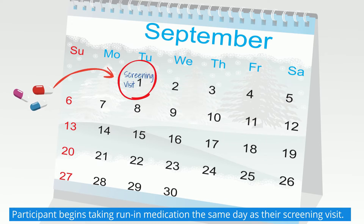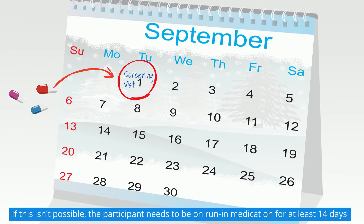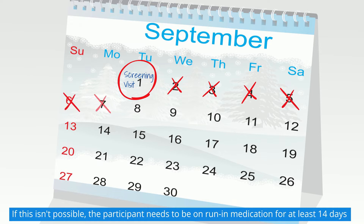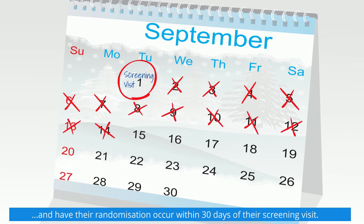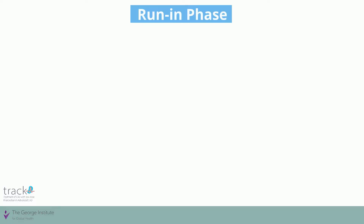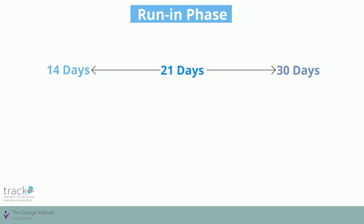Ideally, the participant begins taking run-in medication the same day as their screening visit. However, if this isn't possible, the participant needs to be on run-in medication for at least 14 days and have their randomization occur within 30 days of their screening visit.